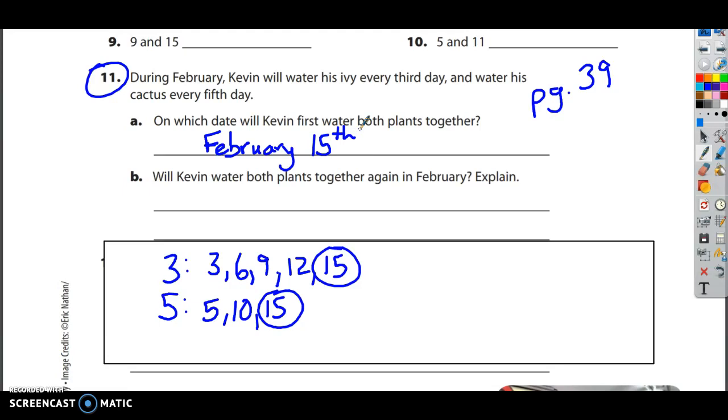And question B says, will Kevin water both plants again together in February? Most kids want to say yes, and if I continued my multiples, I'd go 15, 18, 21, 24, 27, 30. And if you know your 5's really well, you know that it's going to go 20, 25, and 30.